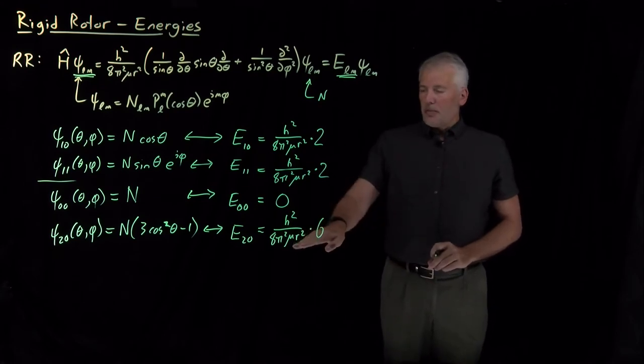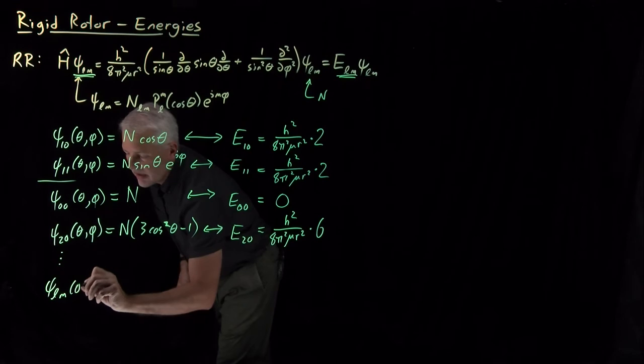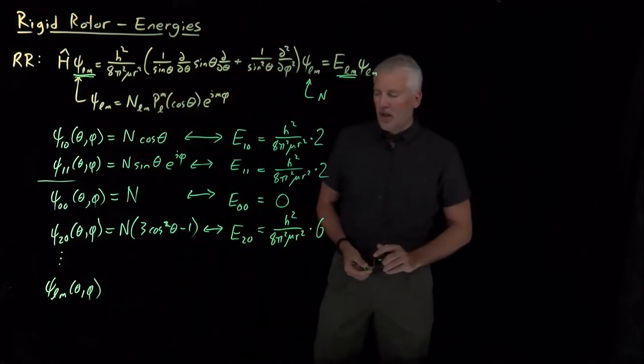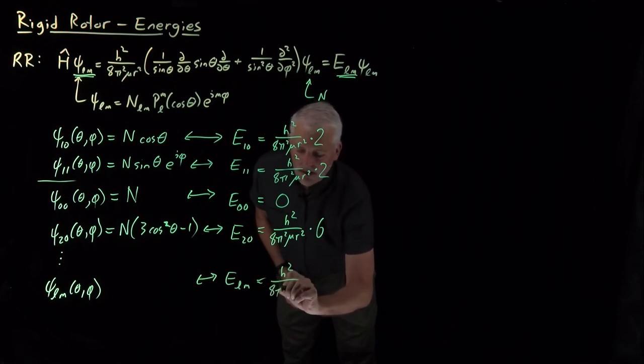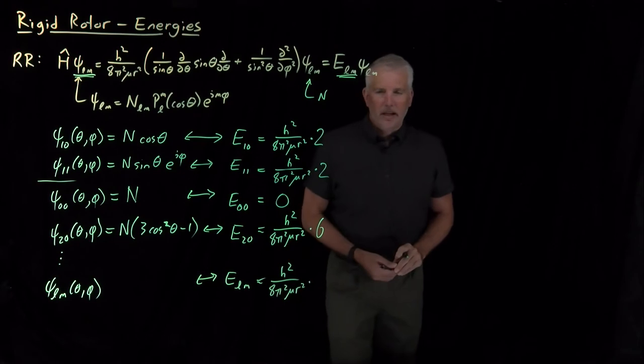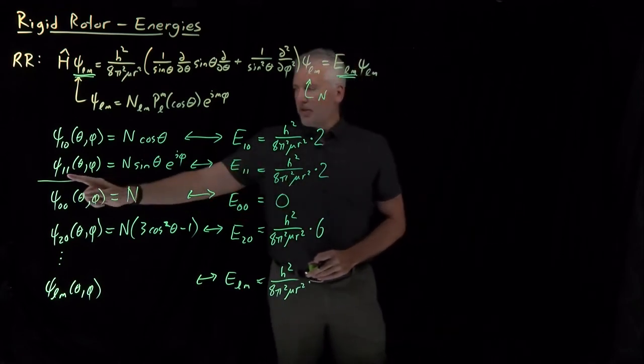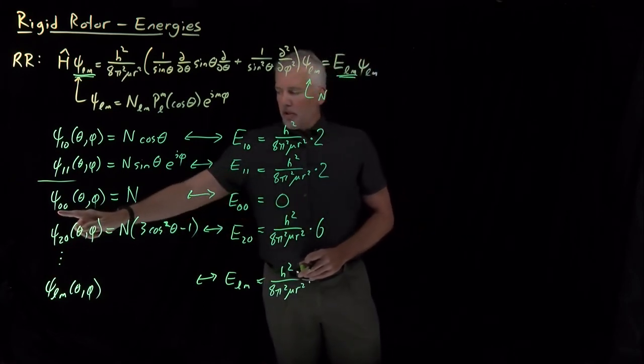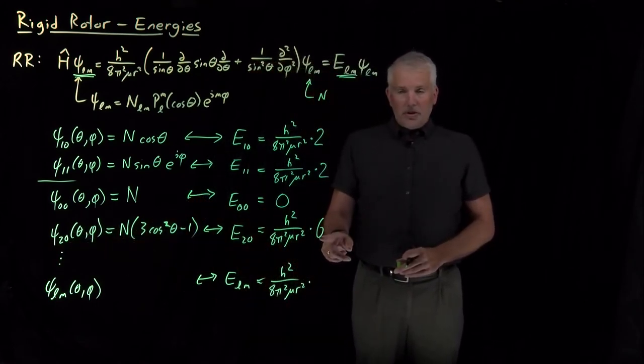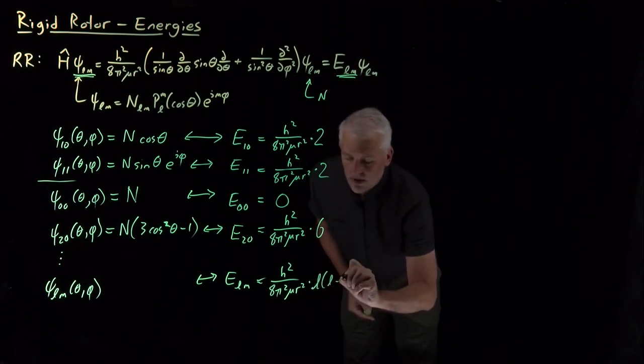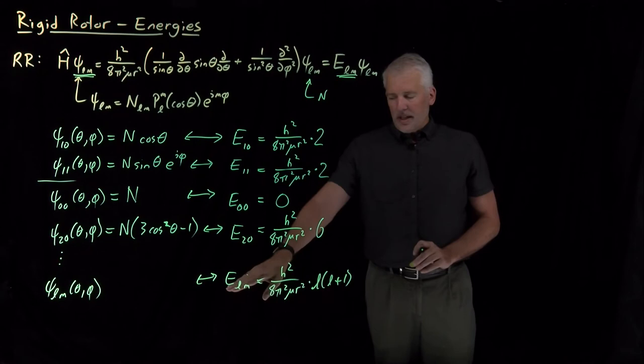Things to point out here are the energies that we get are always, we can do this as many times as we have the patience for, in general, for the LM wave function. The energy of that wave function is always going to be this particular collection of constants, h squared over 8 pi squared mu r squared, multiplied by some number. That number is always going to be an integer. The integer might be 0. The integer might be 2. And in fact, that's what we're going to get every time L is equal to 1. Integer 0 is what we get when L equals 0. For any one of the wave functions that has L equals 2, remember there were five of those, we're going to get the integer 6. And the general pattern is the integer that we multiply these constants by is L times L plus 1. We have not proven that statement. I'm just telling you that statement is true.